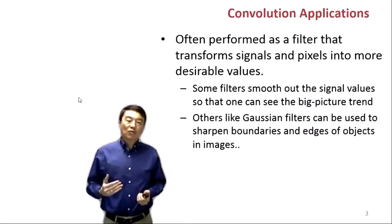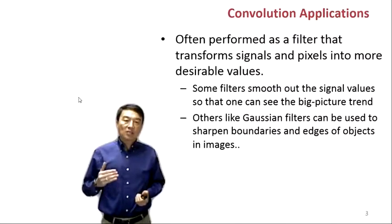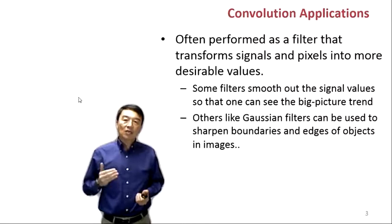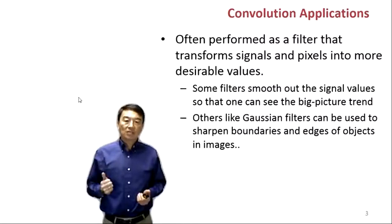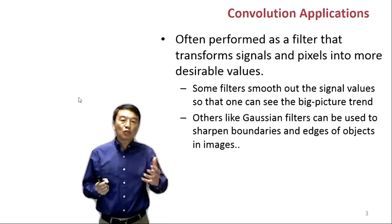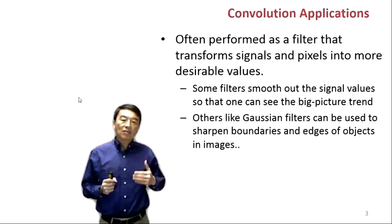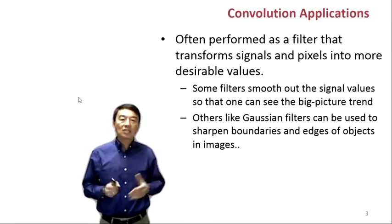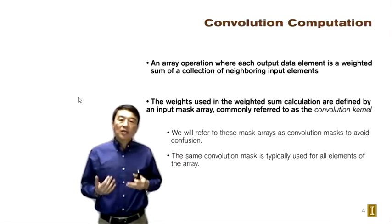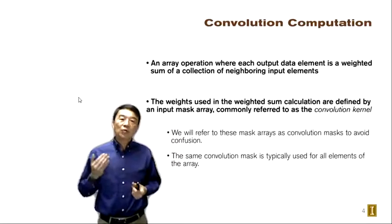Convolution applications are usually performed as a filter that transforms signals or pixels into more desirable values. This is why we often see convolution in signal processing, image processing, or video processing. Some of these filters are used to smooth out signal values so we can see the big picture more easily. In other situations we use Gaussian filters as a convolution computation to sharpen the boundaries and edges of objects in images.